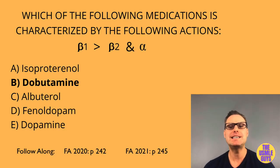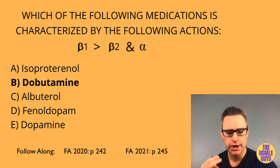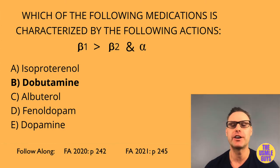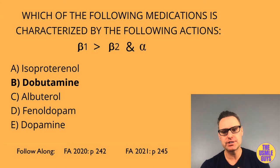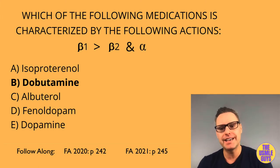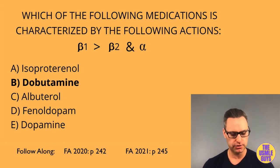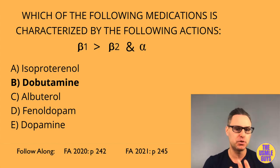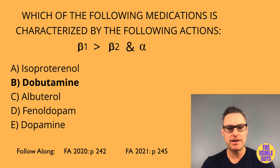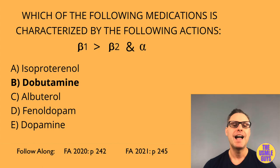The correct answer here is B, dobutamine. Dobutamine is a direct sympathomimetic used in heart failure, cardiogenic shock, and cardiac stress testing — inotropy is greater than chronotropy. Other direct sympathomimetics include albuterol, dopamine, epinephrine, fenoldopam, isoproterenol, midodrine, mirabegron, norepinephrine, and phenylephrine.